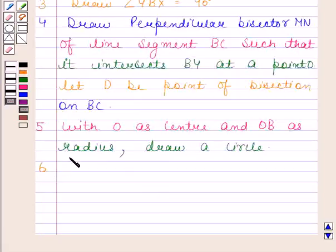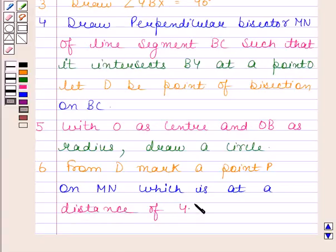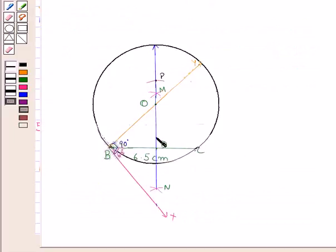In the sixth step, from D, mark a point P on MN which is at a distance of 4.5 centimeters. This is the point P which is at a distance of 4.5 centimeters from point D.